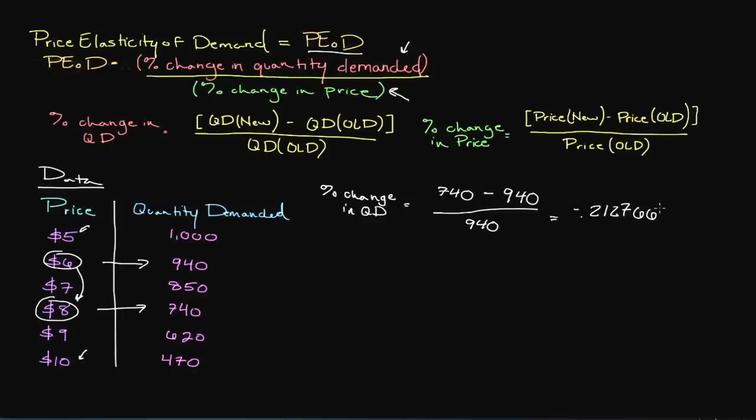And so if you do the math real quick obviously you're going to get a negative number and it should be something around negative .212766. And that's on a percentage basis.